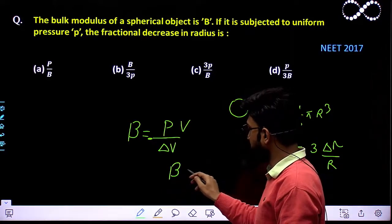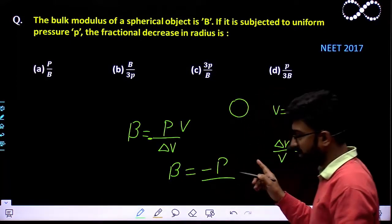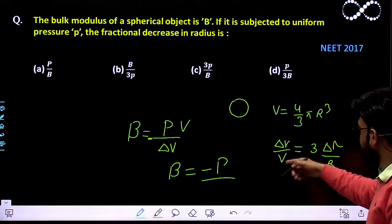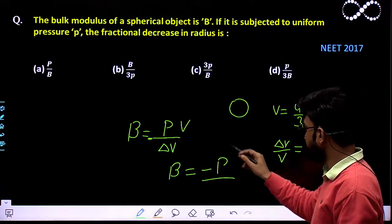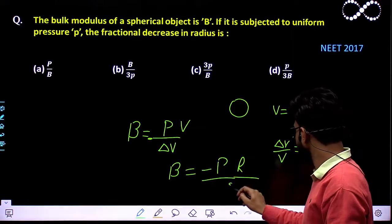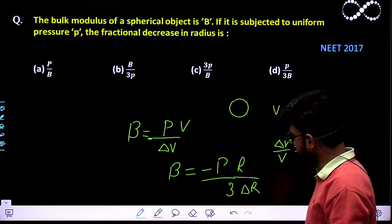So bulk modulus is nothing but minus P times del V by V. V by del V is nothing but R by 3 del R. So this is the expression that we are getting.